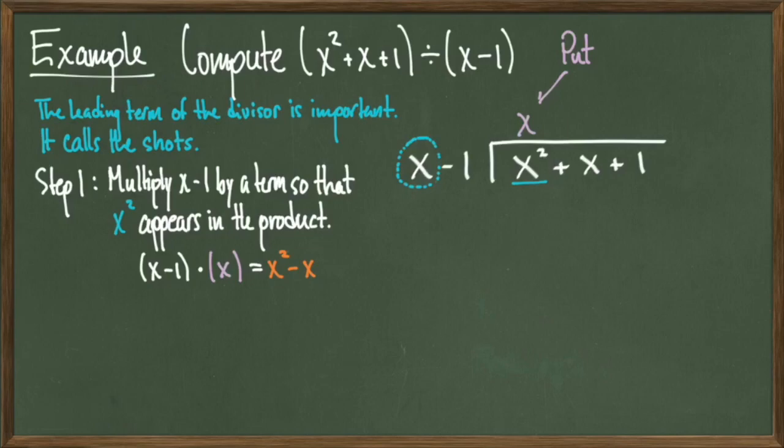This is what we wanted, so I'll put the x term that we came up with on the top of the division bar. It becomes part of our quotient. Then take the product that we came up with and subtract it from the polynomial on the inside. After subtracting, we get 0 plus 2x. The reason we wanted to multiply the divisor by something so that an x squared appears is so that after this subtraction, the x squared gets canceled. The next step is to drop the 1 and we can erase the 0.